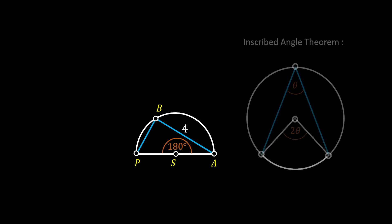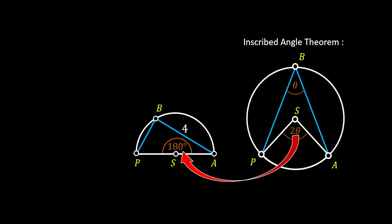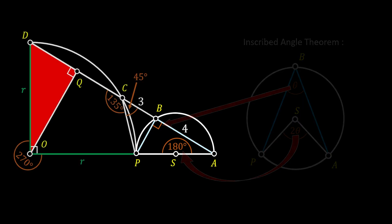We can again use the inscribed angle theorem. Labeling all points on the right sketch the same way as on the left, we can clearly see that the angle of 180 degrees corresponds to the central angle. That means the angle at point B must be half of 180 degrees, so that angle is 90 degrees. The angle at point B on the other side is also a 90 degree angle.